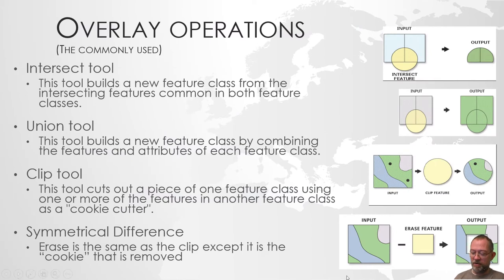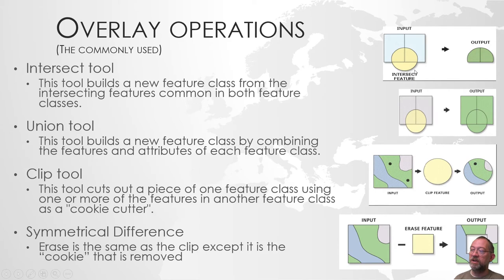Looking at the common overlay tools: we have the intersect tool, which given two layers gives us the intersection of the two. What you should be aware of is that it's not just an area — it's the unique combination of the two layers within the intersecting area. For example, if the blue layer has two polygons and the yellow has one polygon, the output will have two polygons, which are the unique combinations of the two input layers. The output intersect layer will have all attributes from both input layers.